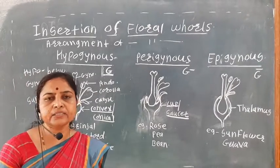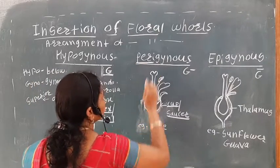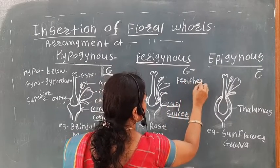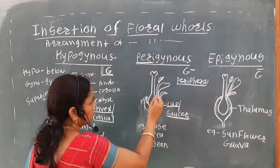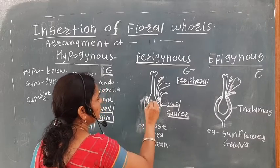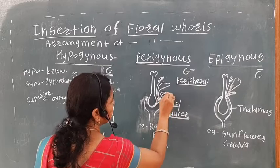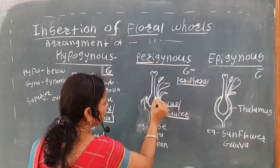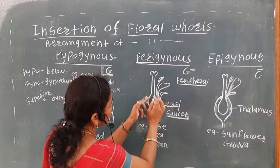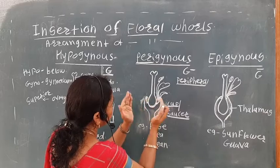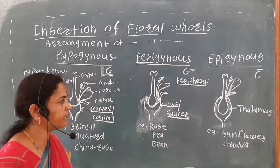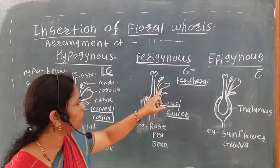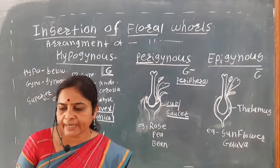In the perigynous flower, 'peri' means around. The floral whorls are arranged at the peripheral region, around the ovary. The calyx, corolla, and androecium are around the ovary — at the peripheral side of the ovary. The ovary is at the center, and the thalamus structure is saucer-shaped or cup-shaped.